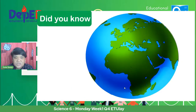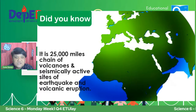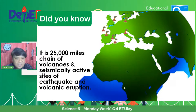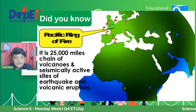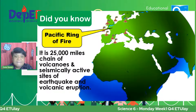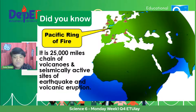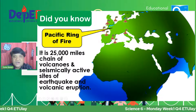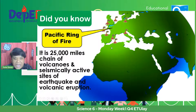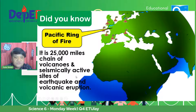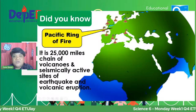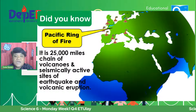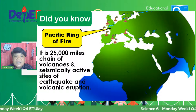Alam nyo ba? Kung bakit paborito ng mga lindol ang ating bansa — it is a 25,000-mile chain of volcanoes and seismically active sites of earthquake and volcanic eruption. Yung tinatawag nating Pacific Ring of Fire. Ang Pilipinas, sa kasamaang palad, ay kasama sa tinatawag na Pacific Ring of Fire — yung magkakadugtong na vulkan. Napapalibutan tayo ng mga magkakadugtong na vulkan na yan. Kaya mapapansin ninyo, taon-taon may lindol ang ating bansa. Hindi natin talaga maiwasan yan.